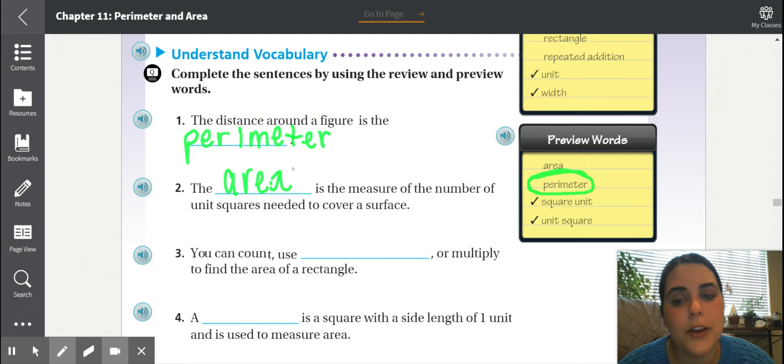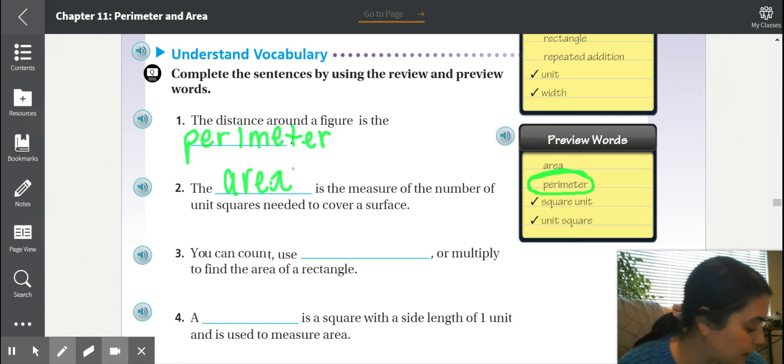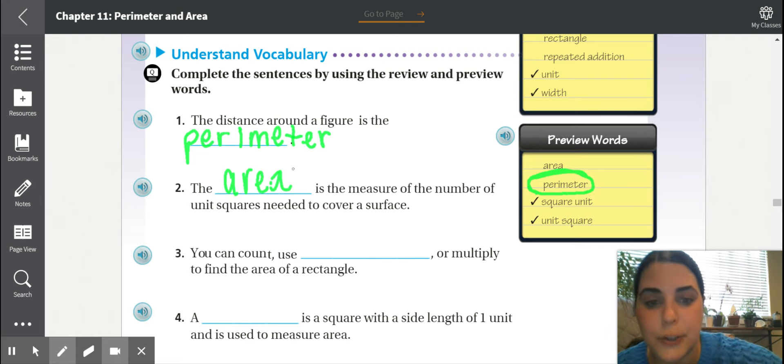Perimeter. We're going to be saying that word a lot. Perimeter. That is the distance that we use to measure around a figure to see how long something is. Number two. The blank is the measure of number of units squares needed to cover a surface. And we would call that the area.